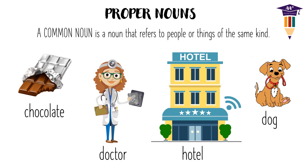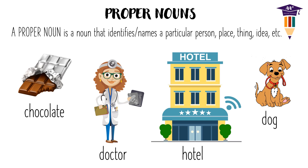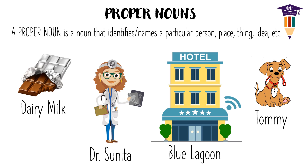When such nouns have proper names, they are called proper nouns. A proper noun is a noun that identifies or names a particular person, place, thing, idea, etc. If we take the same examples but give a specific name to each, they become proper nouns. For instance, let's name the chocolate Dairy Milk, the doctor Dr. Sunita, the hotel Blue Lagoon, and the cute little dog Tommy. These nouns are named and so they're called proper nouns.